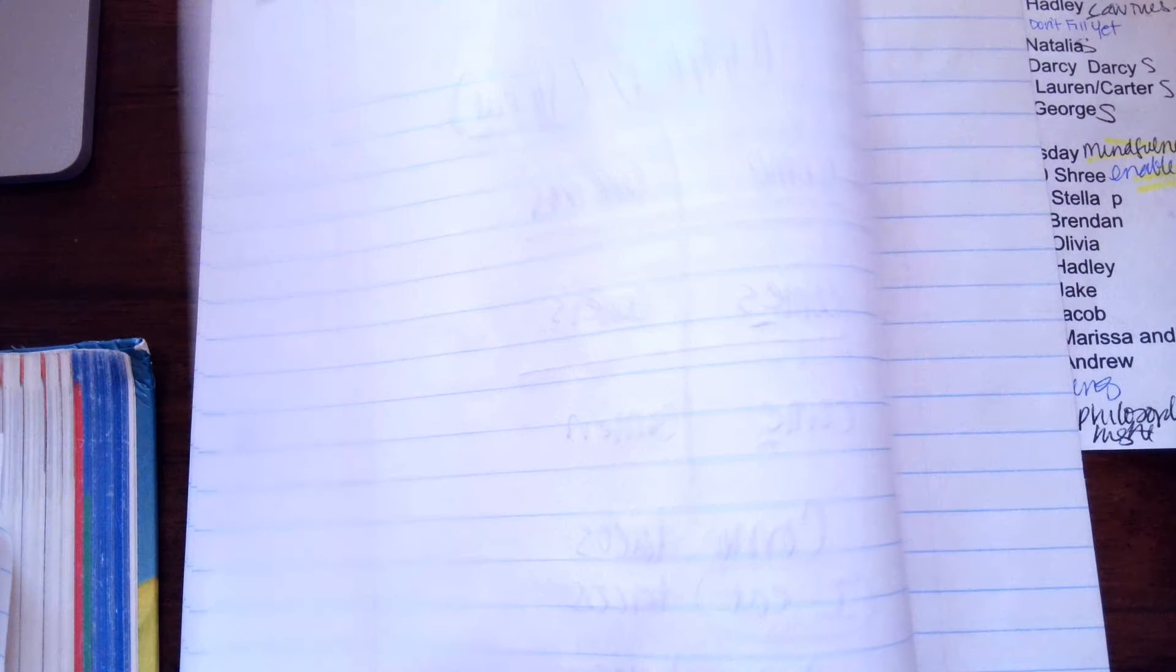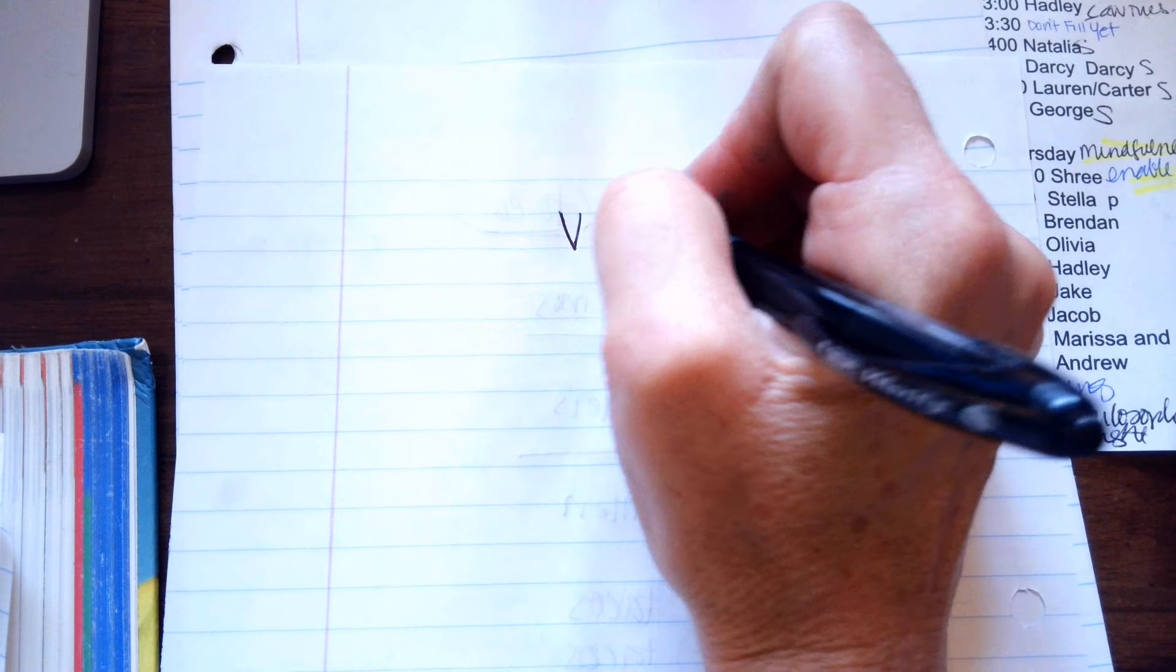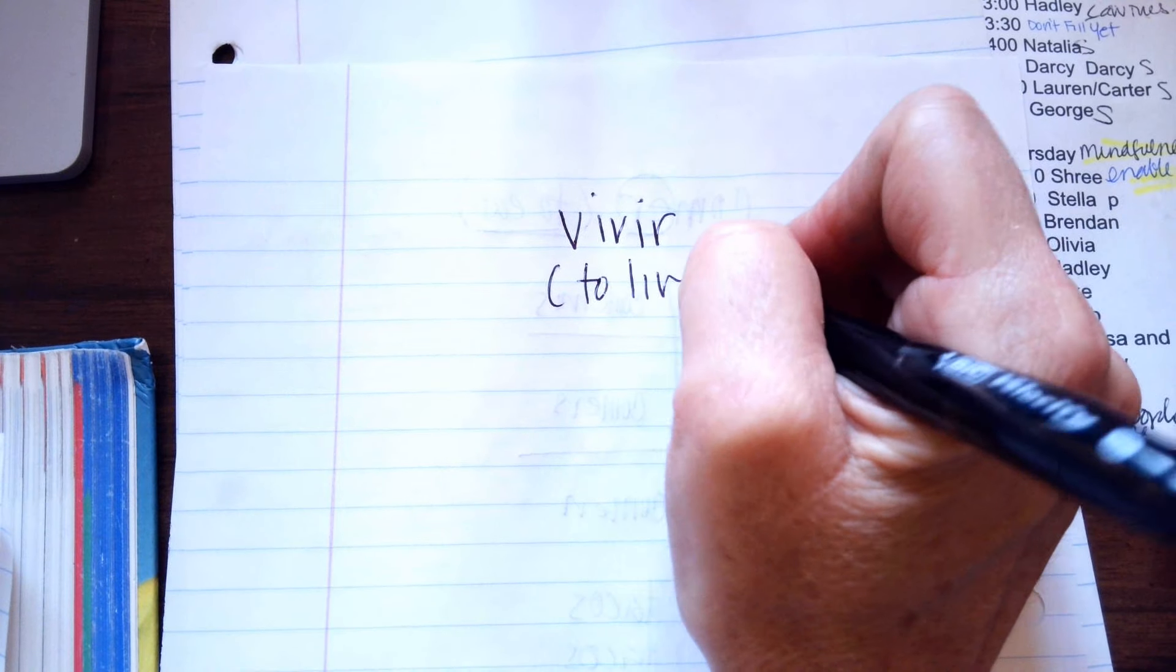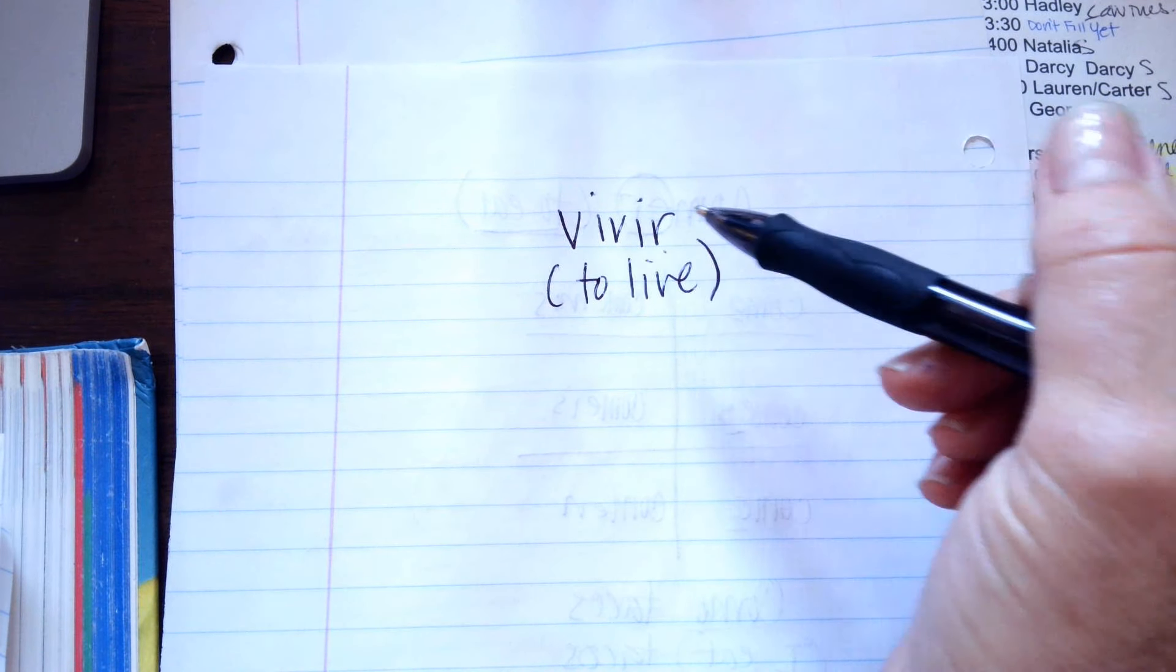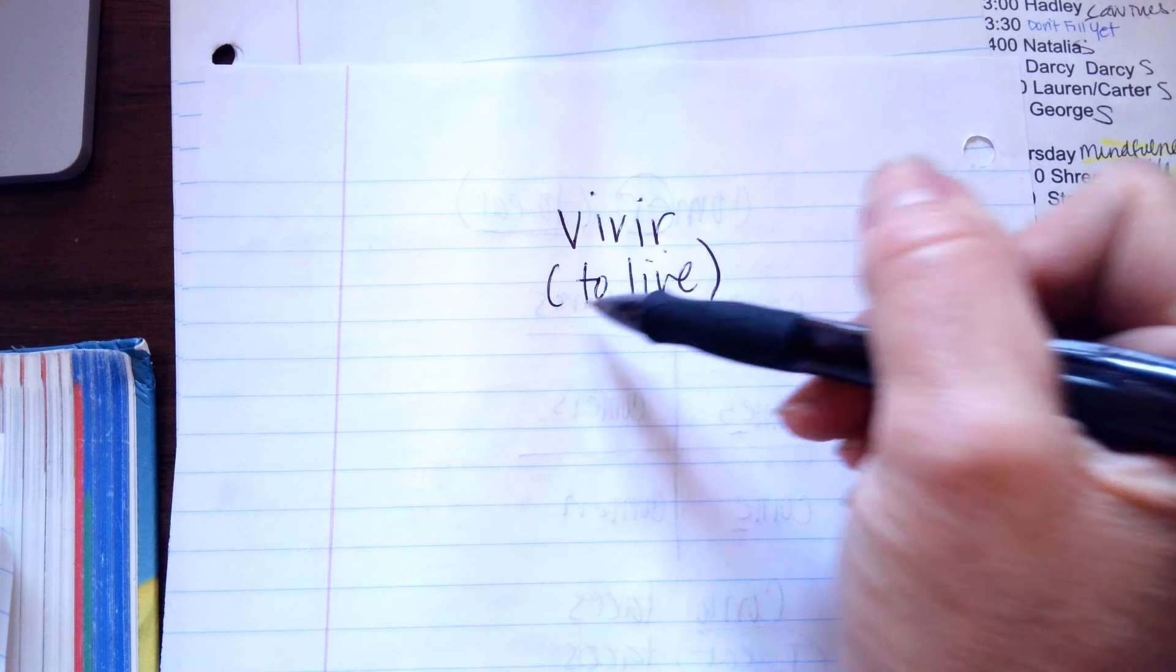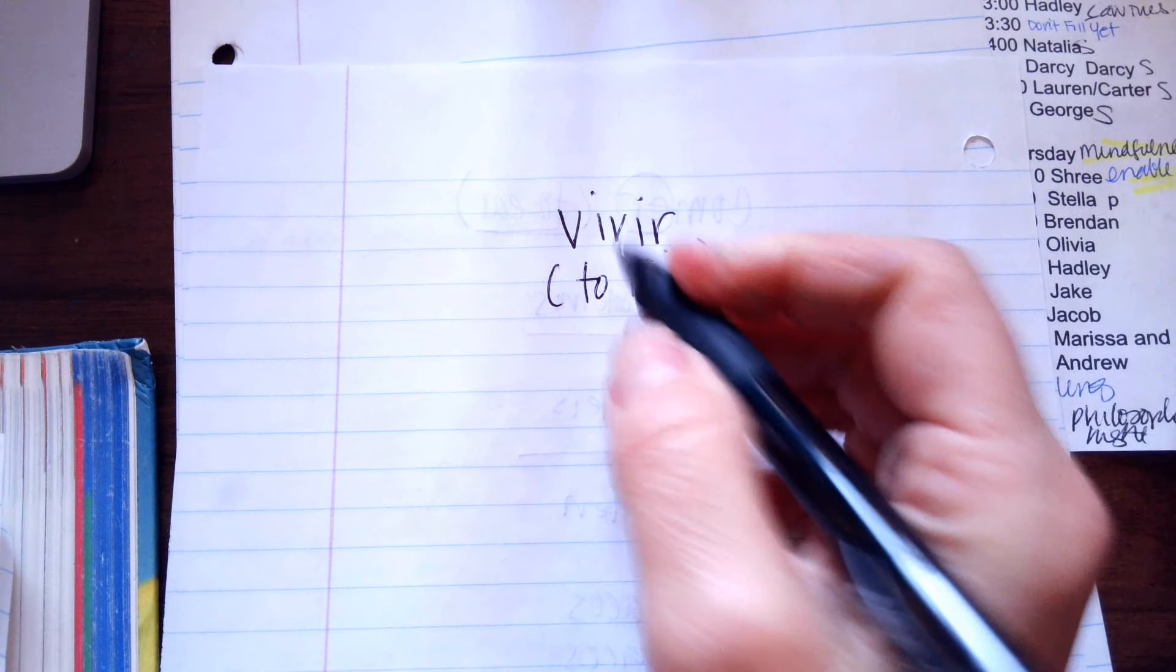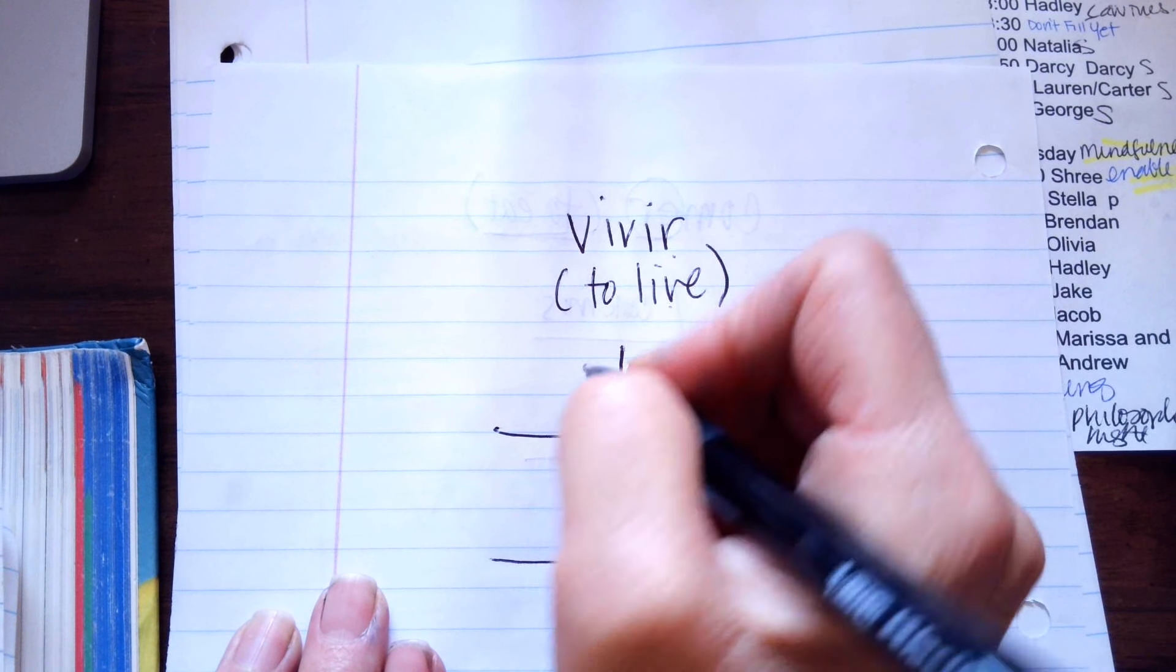The next thing is a verb that ends in IR, like vivir. Vivir means to live. And that's why we can't say vivir in Redwood City, because you're basically asking the person to live in Redwood City. So, you would say, I live, you would add the O.